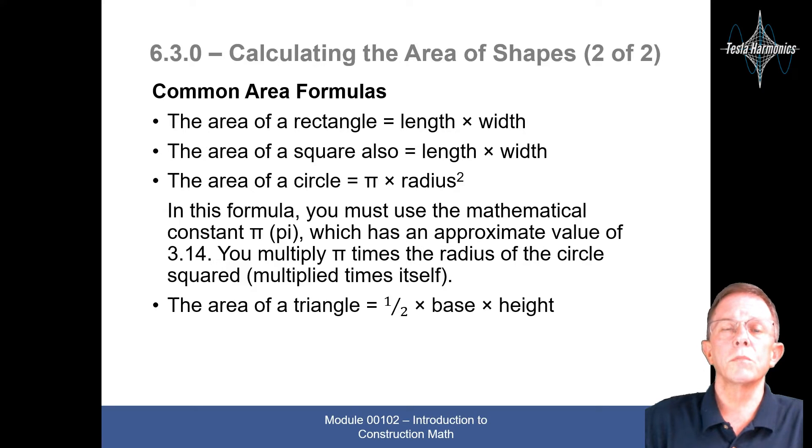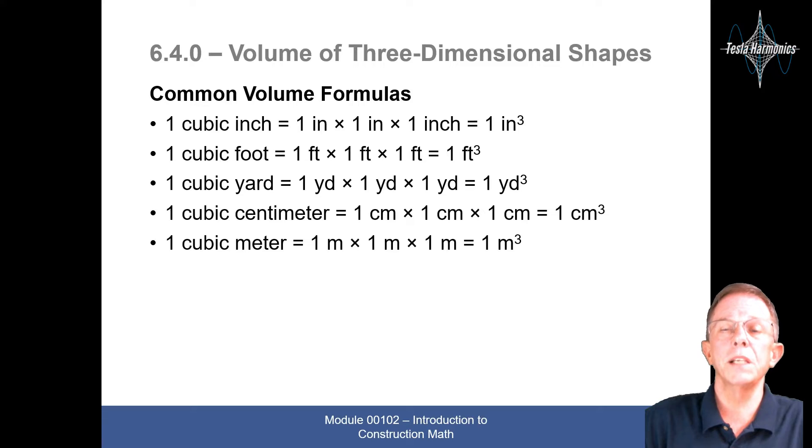Common area formulas. The area of a rectangle equals the length times the width. The area of a square is also length times width. The area of a circle is pi times radius squared. In this formula, you must use the mathematical constant of pi, which is an approximate value of 3.14. You multiply pi times the radius of the circle squared, or multiply times itself. The area of a rectangle is also 1 half times base times height.